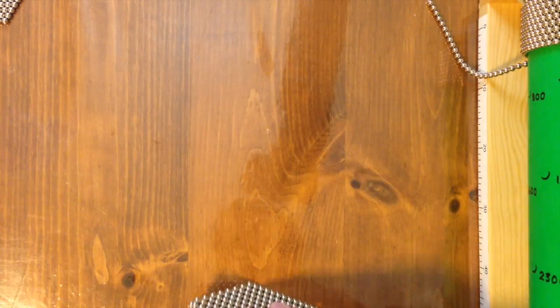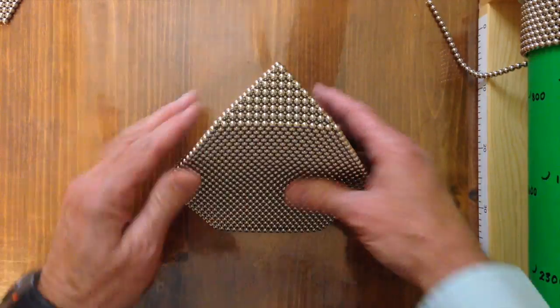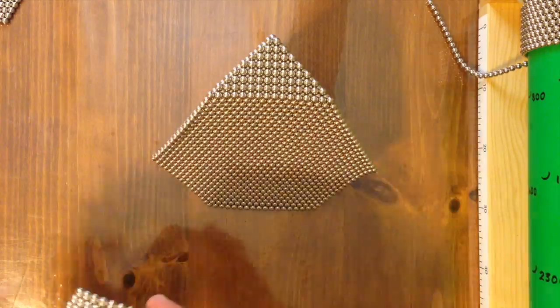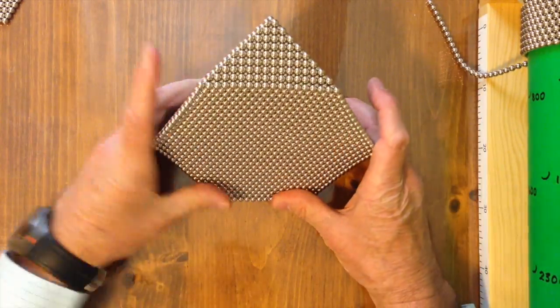Now we turn the cube over and add the rest of the layers, turning each layer over as we add it in order to match its polarity with the cube.